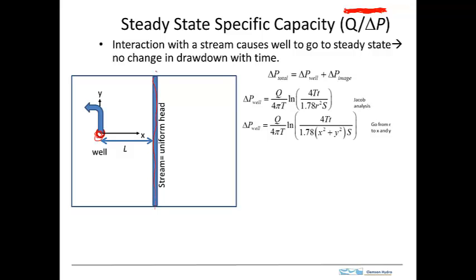To analyze this situation, we use what's called an image well. We have the pumping well and apply the Jacob analysis assuming an infinite aquifer with no boundary. We then add an artificial image well on the other side of the stream and inject into it at a rate equal to the pumping rate. This injection offsets the pumping, so the line halfway between the two wells has no drawdown — the head along that line is maintained at a constant value.